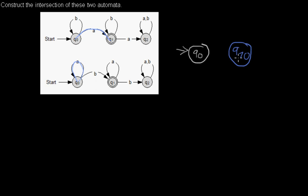This state, which corresponds to two states in the automata, will only be a final state if both of the states it corresponds to are final states. Here Q1 is a final state but Q0 is not, so the intersection state will not be a final state.